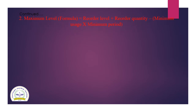Moving ahead to the next level — maximum level. The formula is: re-order level plus re-order quantity minus (minimum usage multiplied by minimum period). Taking the values: 900 units plus 750 units minus (100 units multiplied by 2 months) equals 1650 minus 200, and the answer comes to 1450 units.